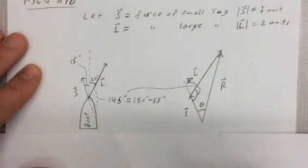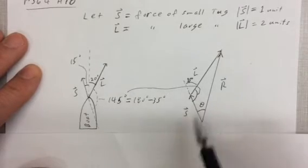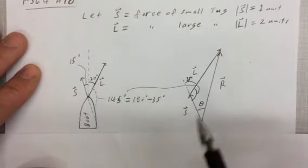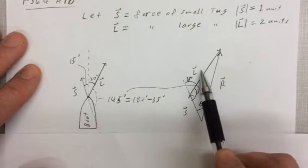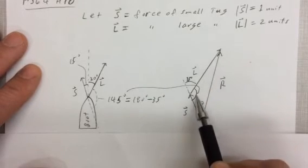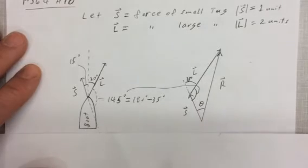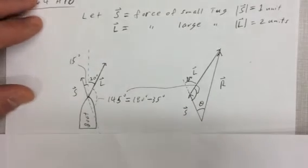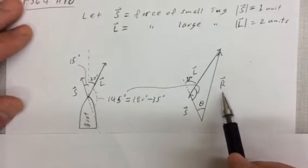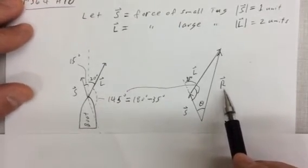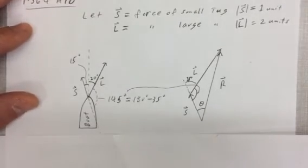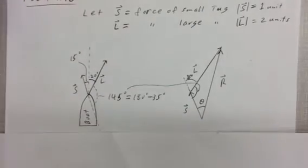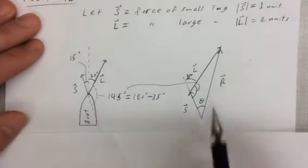Okay, so this is 145. We know the magnitudes of S and L and we know the angle contained between the two is 145. So from that we can figure out what the magnitude of R is, the resultant force, okay, in terms of units, and we can find out theta, which will help us get the direction.